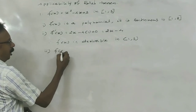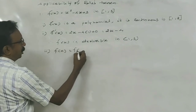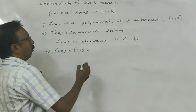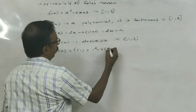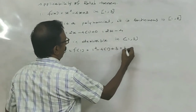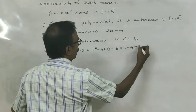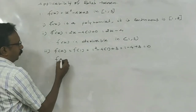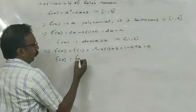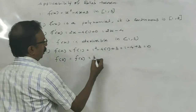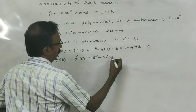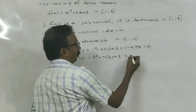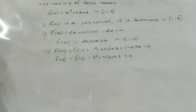For the third condition, we check F of A equals F of B. Here F of A is F of 1: substituting X equals 1, we get 1 squared minus 4 times 1 plus 3, which equals 1 minus 4 plus 3 equals zero. And F of B is F of 3: that is 3 squared minus 4 times 3 plus 3, which gives 9 minus 12 plus 3 equals zero. All three conditions are satisfied.